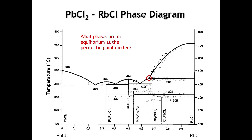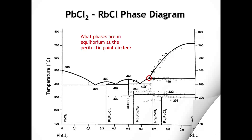I've circled a peritectic point — tell me which phases are in equilibrium at the peritectic point. To answer this, we need to look at the different regions that all meet at the peritectic point. The region above the liquidus is just the liquid, which is always one of the three phases at a peritectic or eutectic point. Then we have a region in equilibrium between the liquid and pure rubidium chloride. The last region is where the liquid is in equilibrium with rubidium2 lead Cl4. So at the peritectic point, we have an equilibrium between the liquid, Rb2PbCl4, and rubidium chloride.